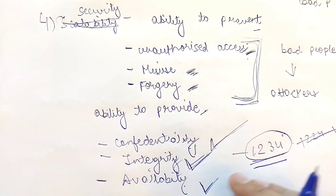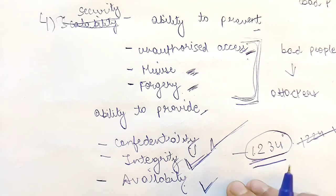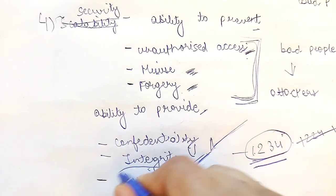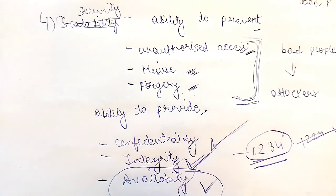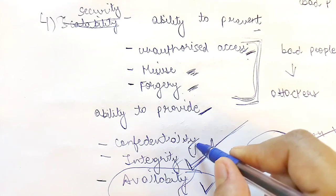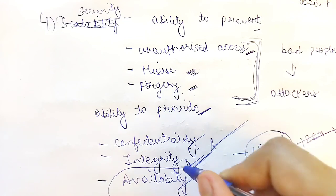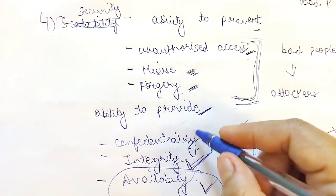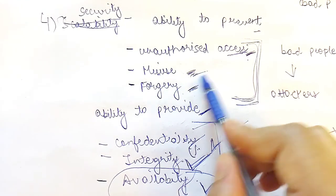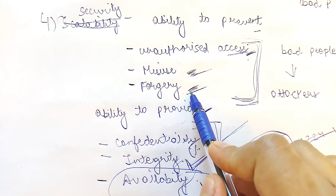Next is availability. Many times attackers try to deface web servers so that resources become unavailable for access. It becomes the responsibility of the computer network to ensure the network is always available for use. If the network provides confidentiality, integrity, and availability, there will be no unauthorized access, no misuse, and no forgery. So these were the four important characteristics of a computer network which every computer network must have.